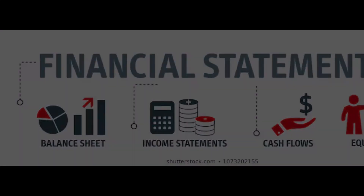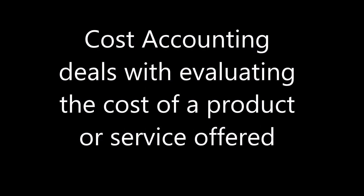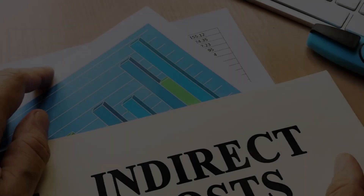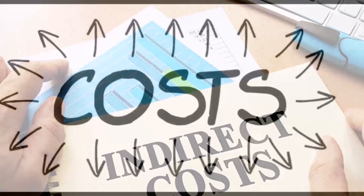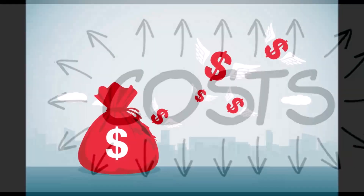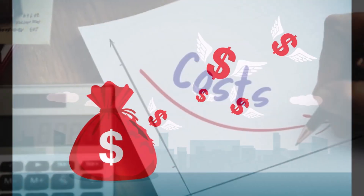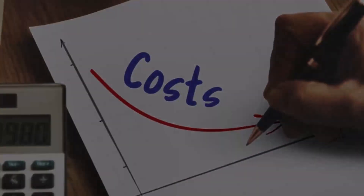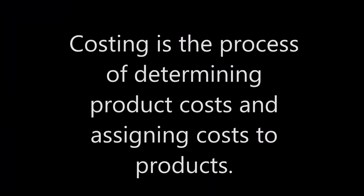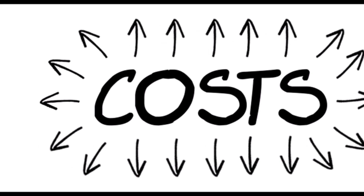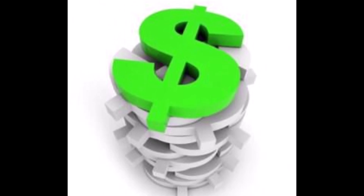Now, let's go on to cost accounting. This deals with evaluating the cost of a product or service offered. It calculates the cost by considering all factors that contribute to the product output, both manufacturing and administrative factors. Determining product costs and assigning costs to a product is called costing. The main objective of cost accounting is to help management in fixing prices and controlling the cost of production. It also pinpoints many wastages, leakages, and defects during the manufacturing and marketing process.